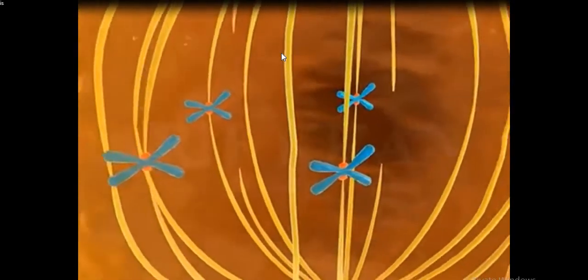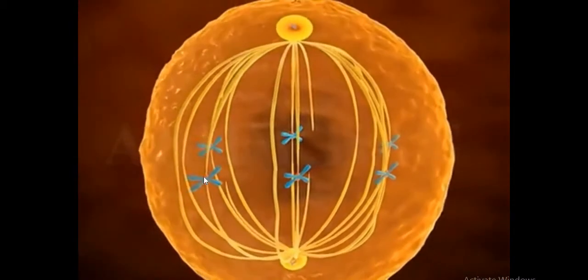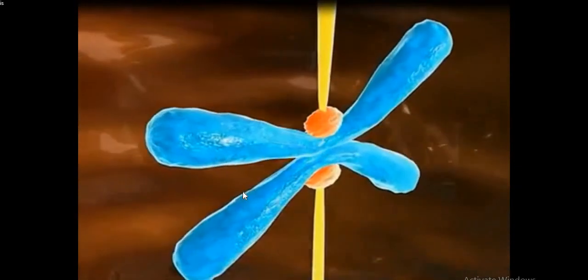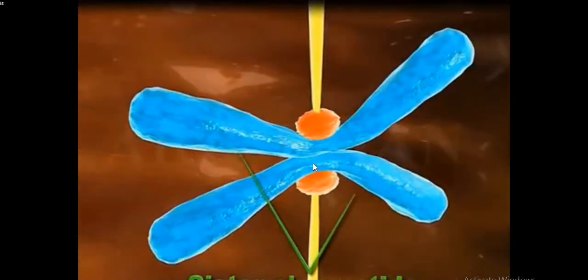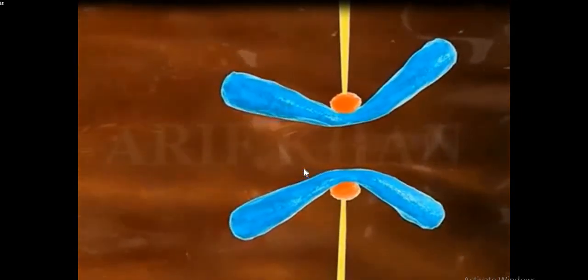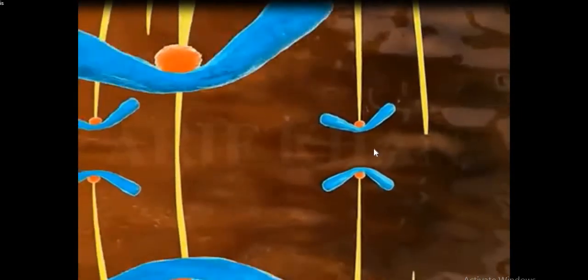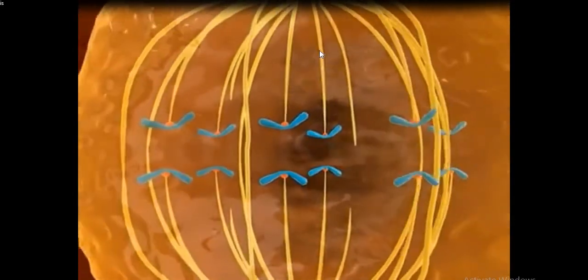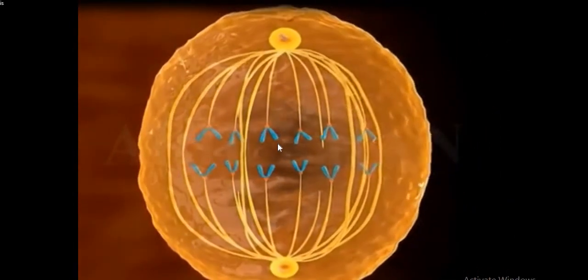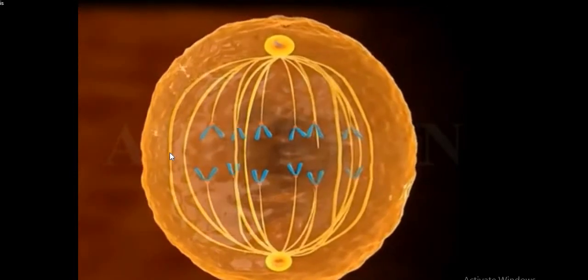Then comes the anaphase, and during anaphase both of the sister chromatids start getting detached from each other. That means the sister chromatids will move towards two different poles of the cell, the opposite poles of the cell. Once this separation is completed, the anaphase process will also get completed.